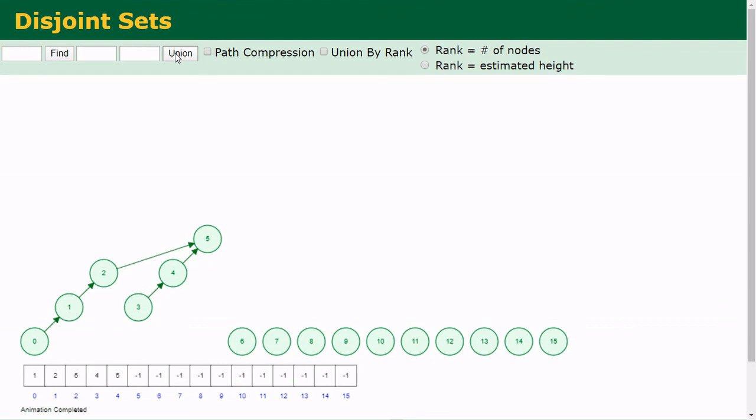Then you can see as in the binary search tree, you can see the tree is growing towards the side, like what we have done in the binary search tree. That is if I am performing 5 union 6, then it will come like this.